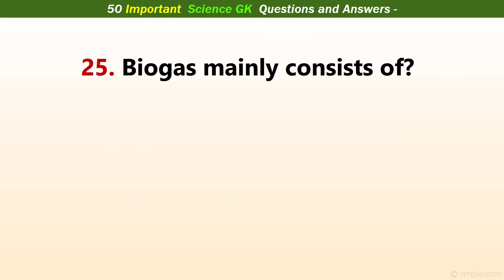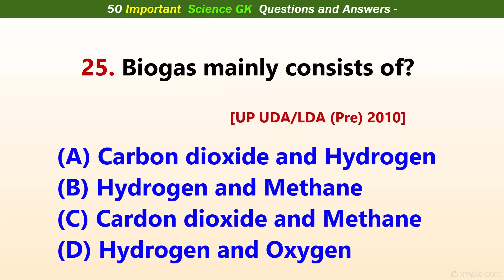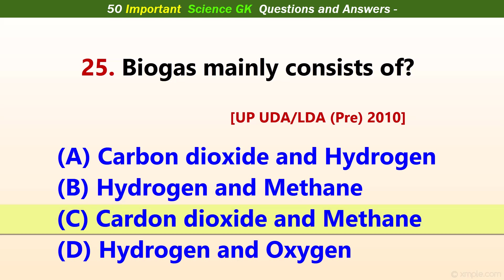Biogas mainly consists of? Answer C: Carbon dioxide and methane.